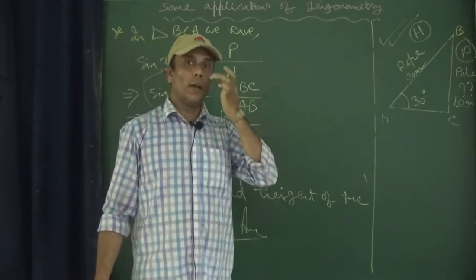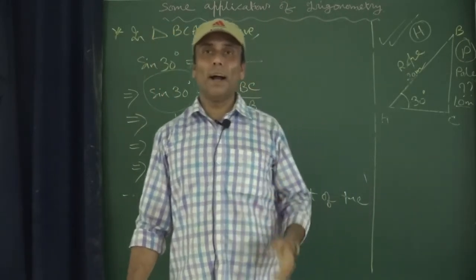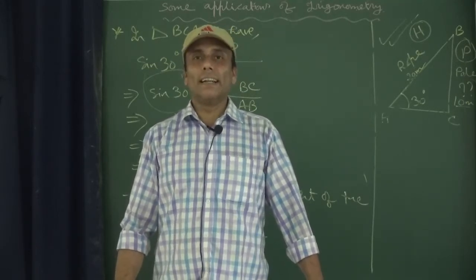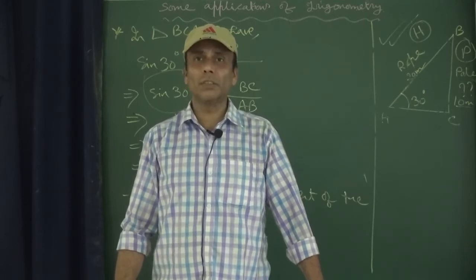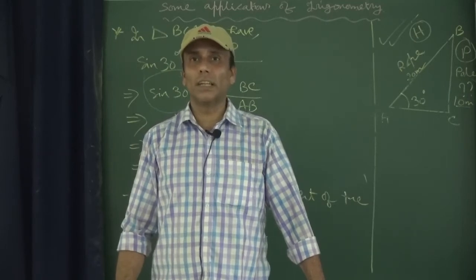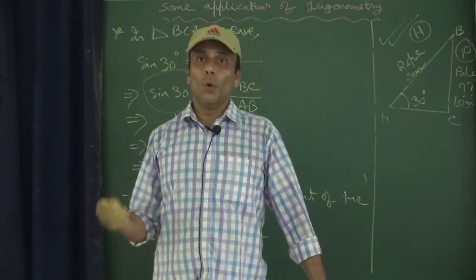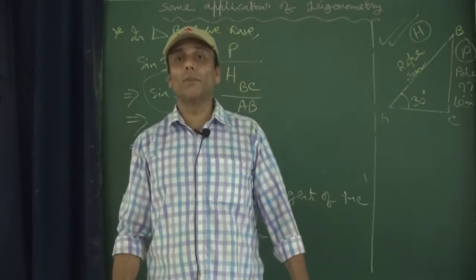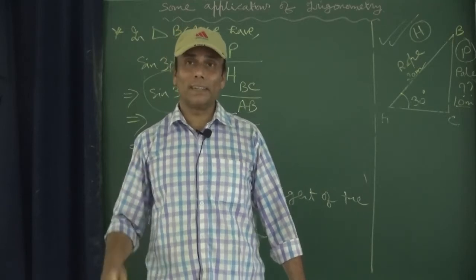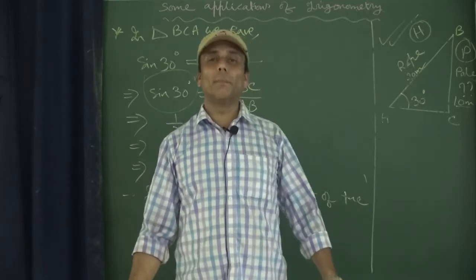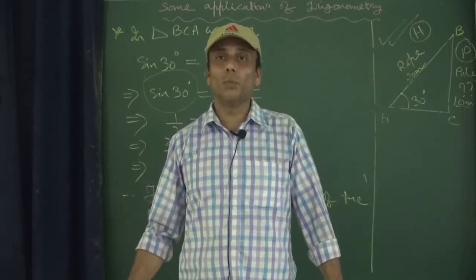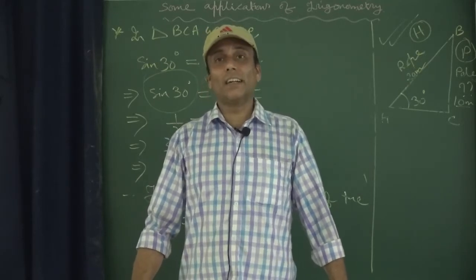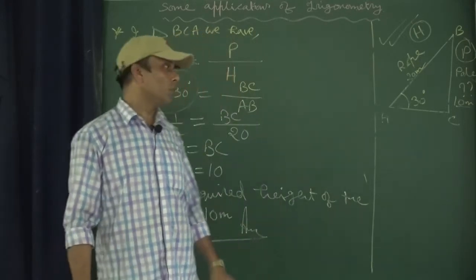It is very easy. The main thing is to understand the question by reading it part by part. Find what values are given and what is asked, then use the appropriate trigonometric ratio. If perpendicular and base are involved, use tan theta, which equals perpendicular by base. Depending on availability, select the desired trigonometric ratio and solve.